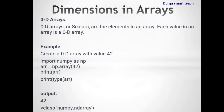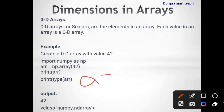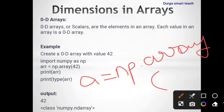We all know arrays are used to store a collection of data items in continuous memory locations. So the declaring syntax for an array is: array name equals np.array of values — for example, 10, 20, 30. In this way, we can create an array.